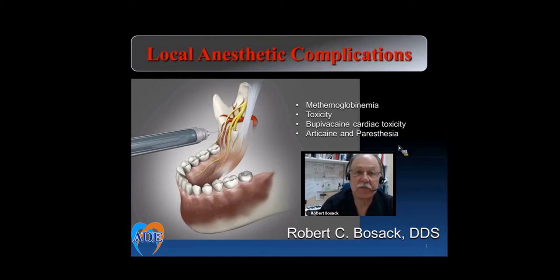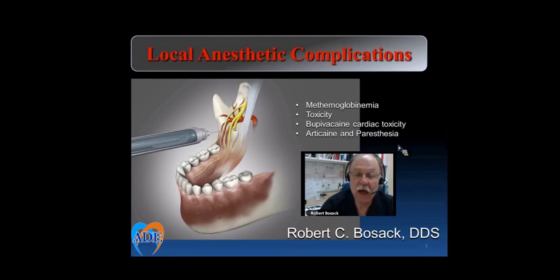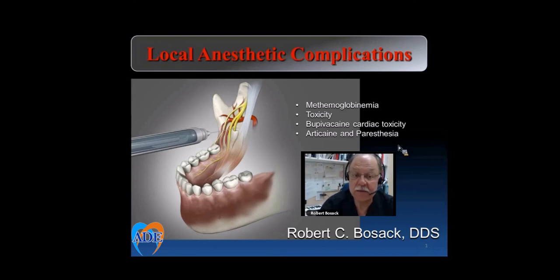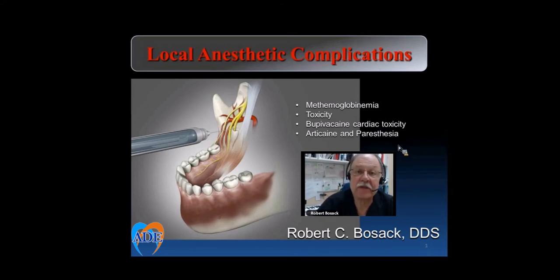Some of the highlights of this presentation will include the inferior alveolar nerve block, why we miss it, is articaine acceptable to be given as a mandibular block, and how to address situations such as: my lip is numb, but the tooth is not.